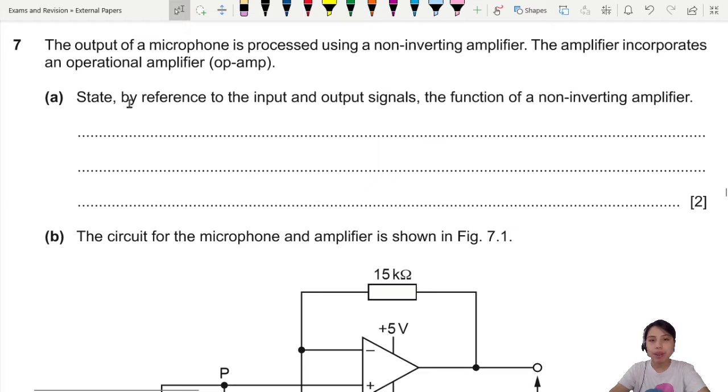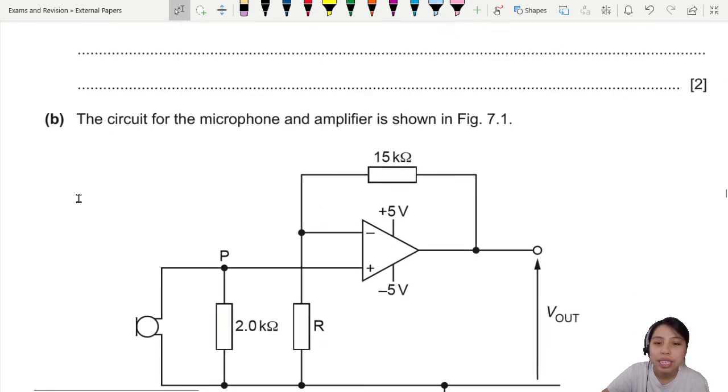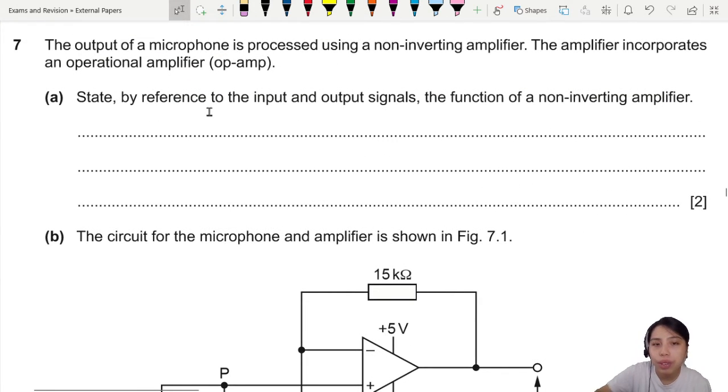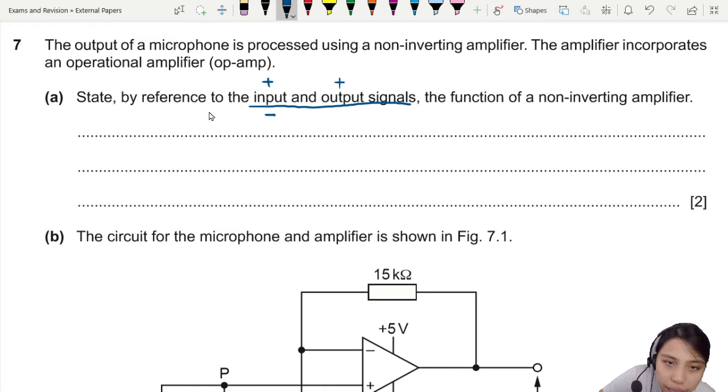State by reference to the input and output signals, what's the purpose of a non-inverting amplifier? Can you remember what a non-inverting amplifier is about? Amplifier is to increase the gain, yes, but they want you to refer to the input and output signal. If you're sending the input positive, your output is also positive. Non-inverted, so always positive. If you send your input to be negative, your output also negative, non-inverted.